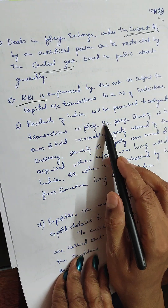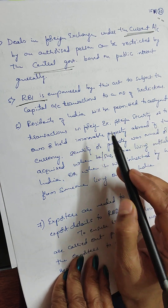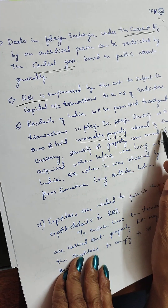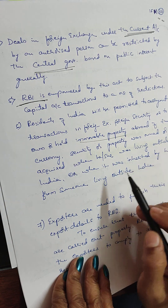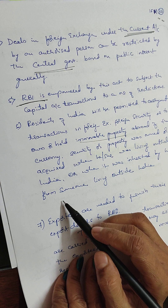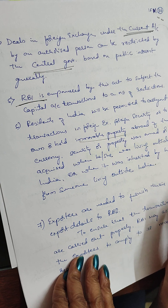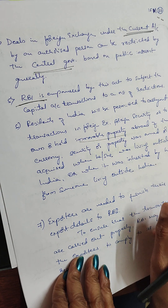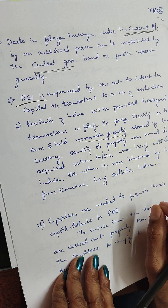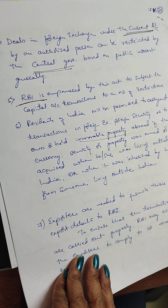Residents of India will be permitted to carry out transactions in foreign exchange, foreign security, or to own or hold immovable property abroad if the currency, security, or property was owned or acquired when he or she was living outside India, or when it was inherited from someone living outside India.